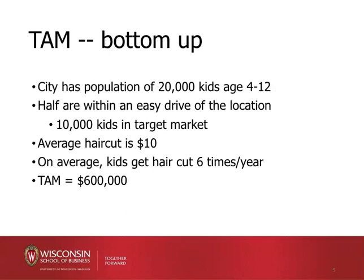A better way of doing this would be to try a bottom-up approach. For example, you could get population data, and from there it wouldn't be too difficult to figure out how many people in the city are actually children. That kind of demographic data is often readily available, and you might come up with an estimate like there are 20,000 kids aged 4 to 12 in your target city. Then you identify the location you're hoping to place the salon, and using zip code data, you might determine that roughly half the kids in the city live within easy driving distance — maybe 4 to 5 miles — of the location. You might do a survey or talk to people to find out how far they're willing to drive to get their kids' haircuts.